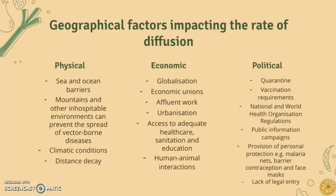The geographical factors impacting the rate of diffusion include physical factors: seas, ocean barriers, mountains, and other inhospitable environments can prevent the spread of airborne diseases, and climatic conditions and distance decay also play a role. Economic factors include globalization, economic unions, affluence, urbanization, and access to adequate healthcare, sanitation, and education, as well as human-animal interactions.